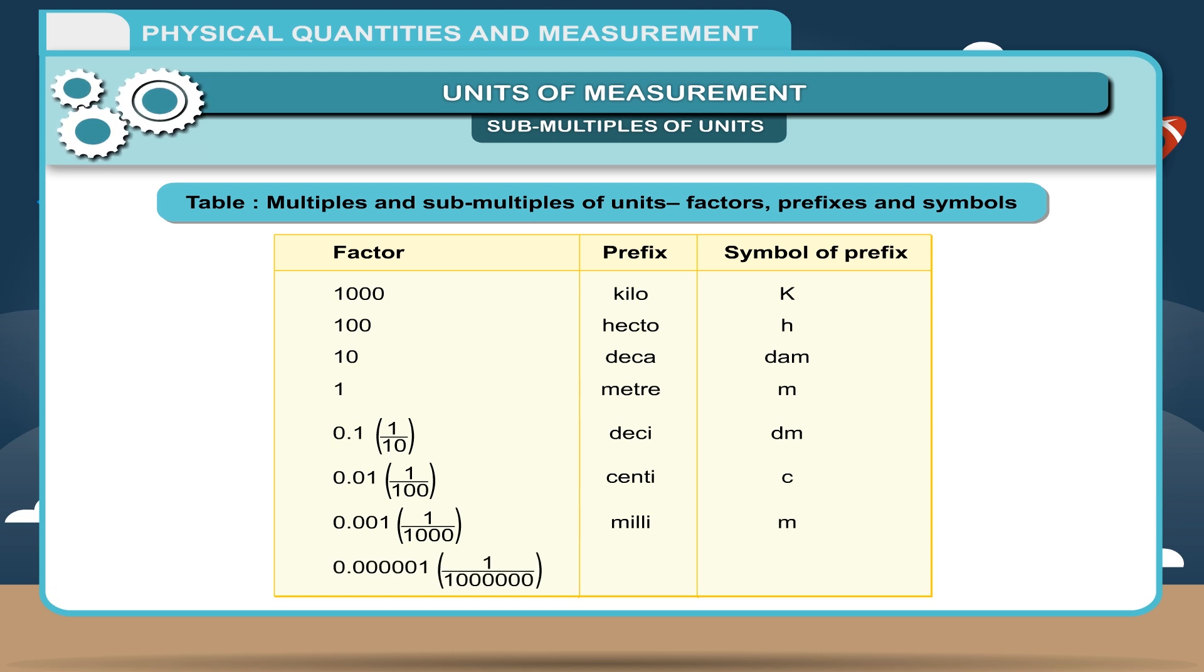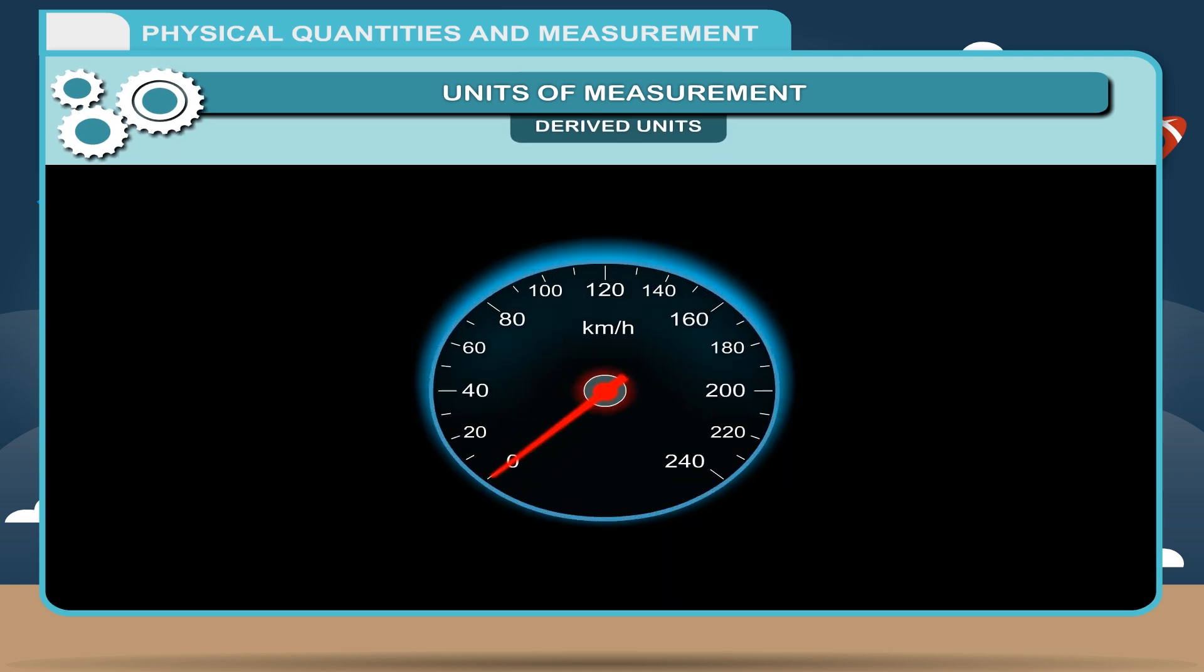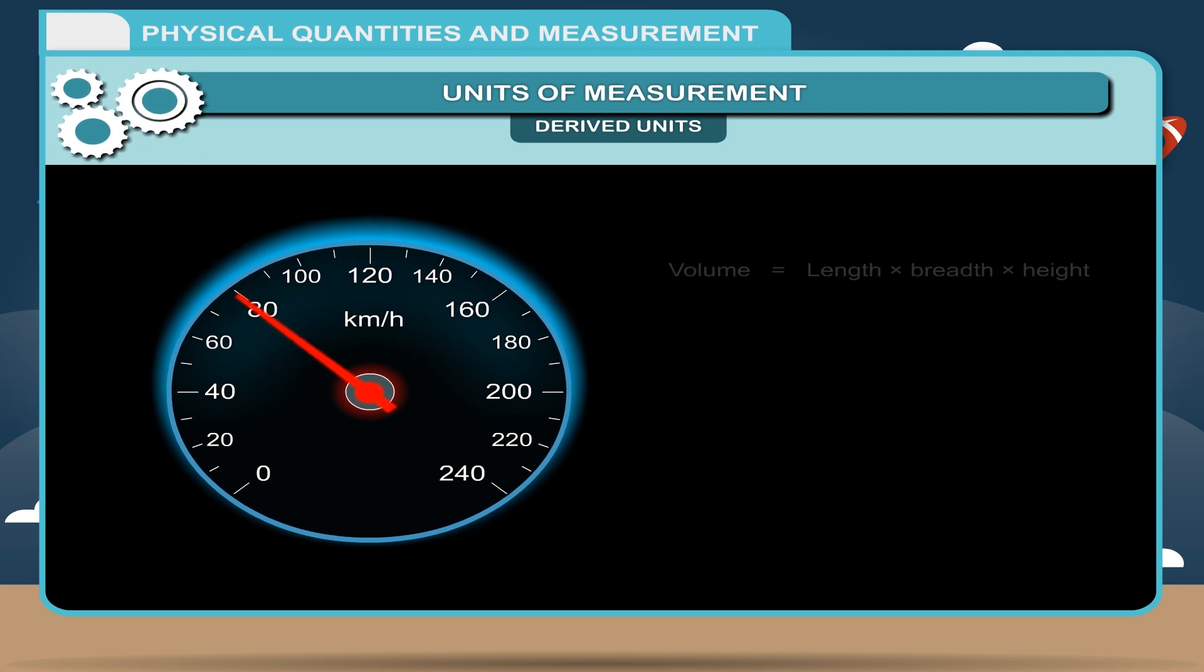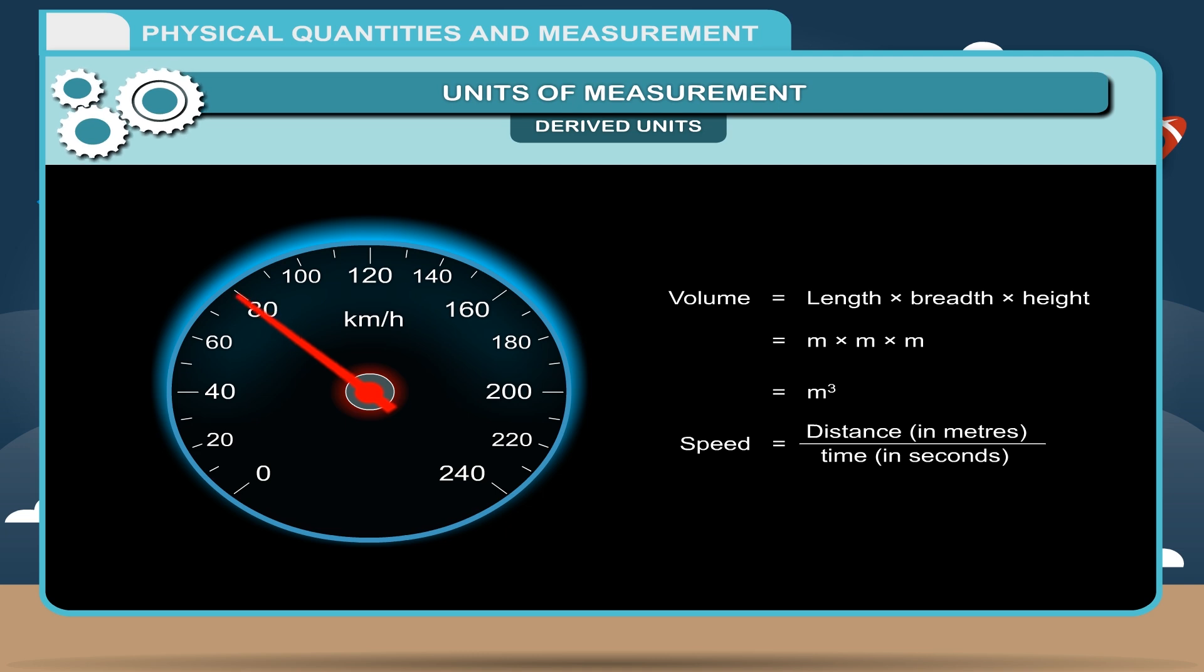Derived units: Speed equals distance in meters divided by time in seconds, equals meters per second (M/S).